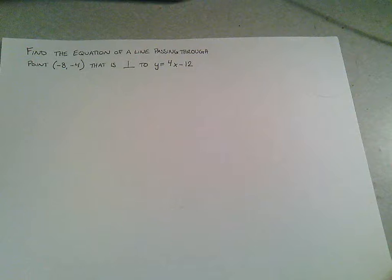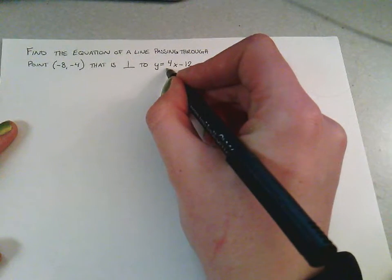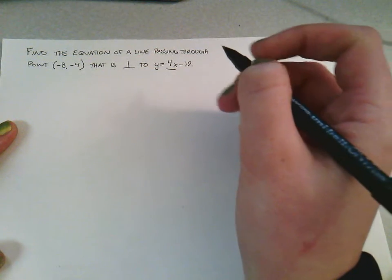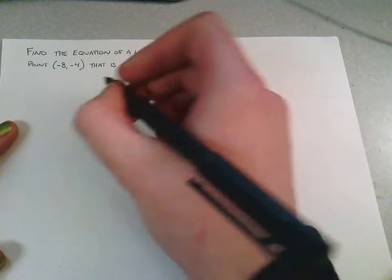Our first step in this process will be to see that this equation has a slope of 4. So to find an equation that is perpendicular to that,